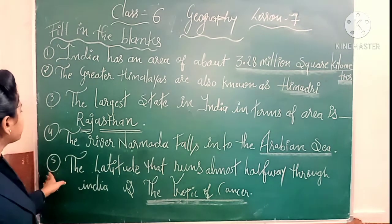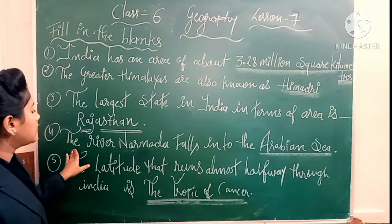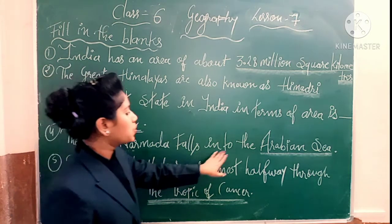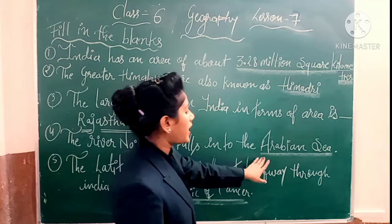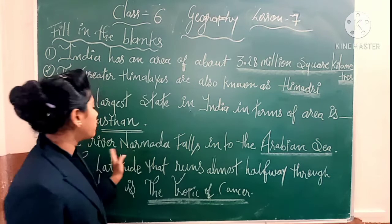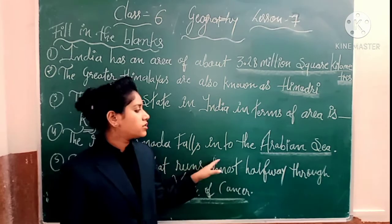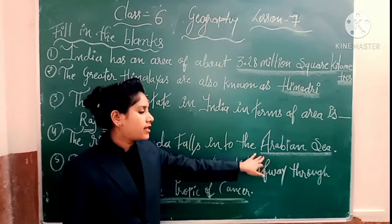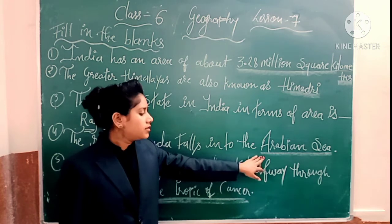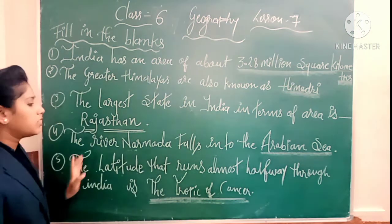Now number 4. The river Narmada falls into the — dash. Jo river Narmada fall karti hai, wo kahan par fall hoti hai? Arabian Sea mein. Arabian Sea mein. This is your answer.